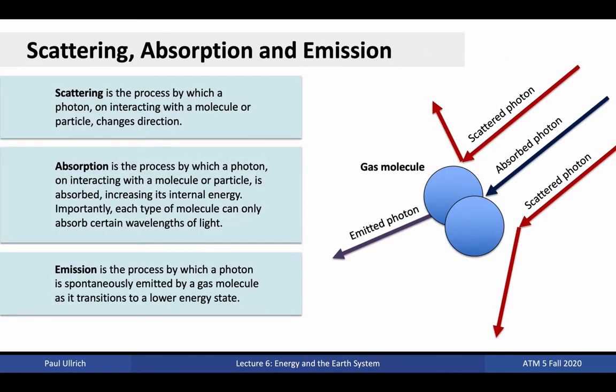Scattering refers to the process by which a photon, on interacting with a molecule or particle, changes direction. Scattering can be in essentially any direction and is the process responsible for blue skies during the day and red skies in the evening. Absorption refers to the process by which a photon, on interacting with a molecule or particle, is absorbed and increases the internal energy of that molecule or particle. Importantly, each type of molecule can only absorb certain wavelengths of light. Emission refers to the process by which an excited atom or molecule will spontaneously emit a photon and in the process drop to a lower energy state. Again, emission can only occur for select wavelengths of light.